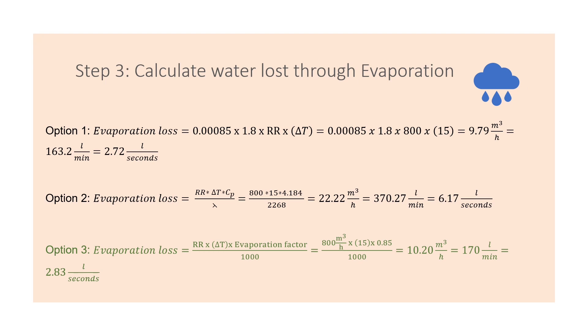And lastly there's the third option to get evaporation loss whereby it just looks at the evaporation factor, the circulation rate, and the change in temperature divided by a thousand. If you punch everything to calculator you should get the water loss through evaporation in the form of meter cubed per hour. Assume that the third equation is more accurate and efficient. Let's work with it moving forward.